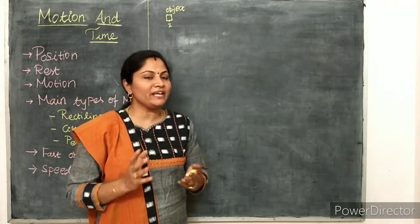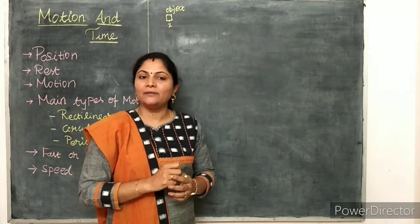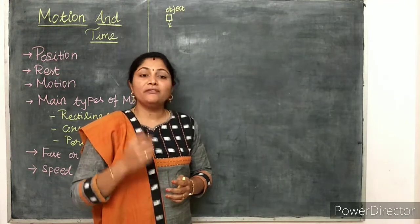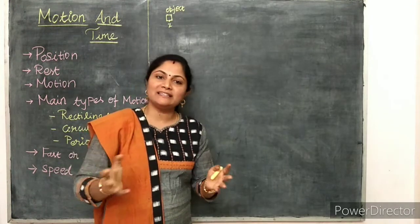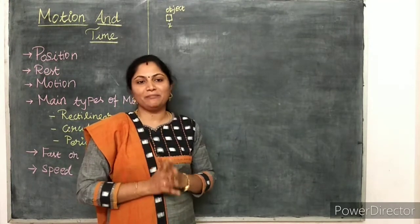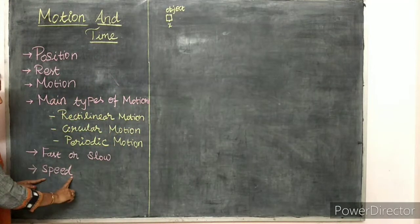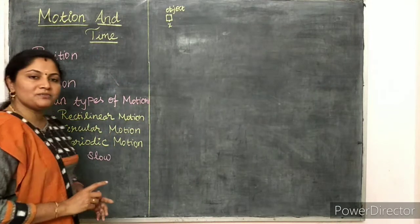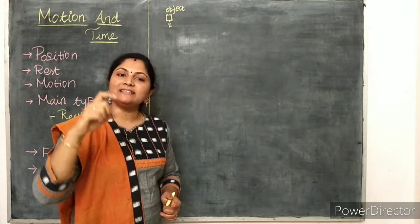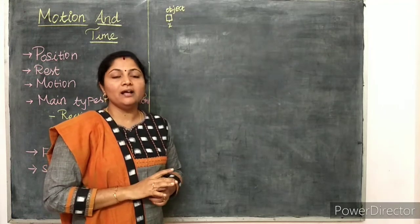What is meant by speed of an object? This is the main concept of this lesson. In order to say which object is faster, we need to know the total distance covered by that object with respect to a time interval. Speed of an object is nothing but the total distance covered divided by the total time taken.